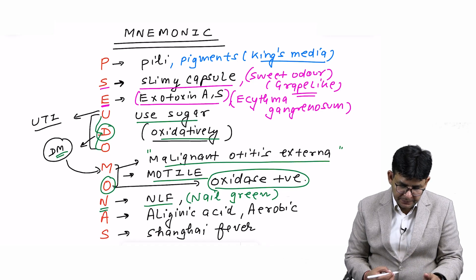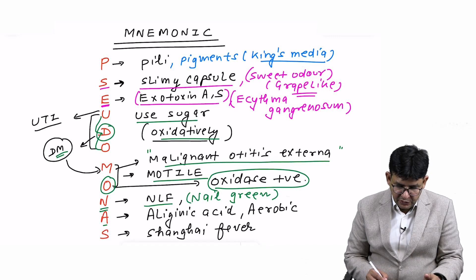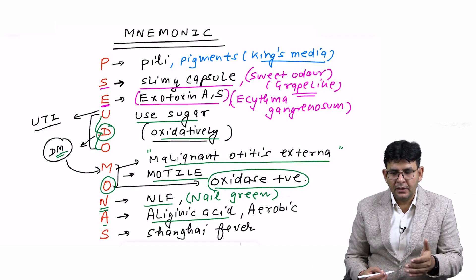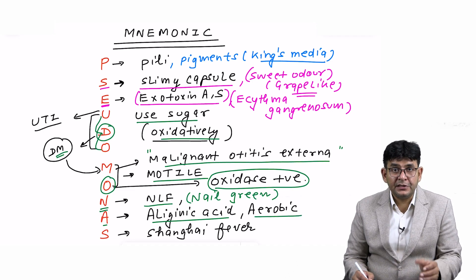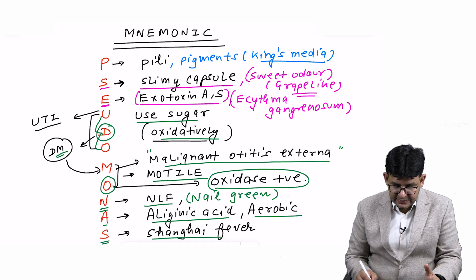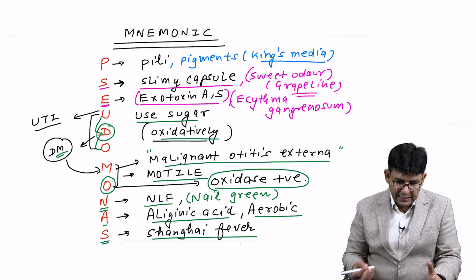A stands for alginic acid, another component of the capsule, and it is aerobic—a strict aerobe, an obligate aerobe. S is Shangri fever.